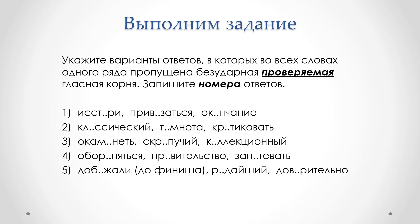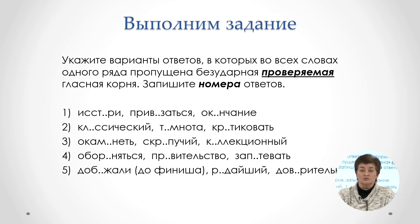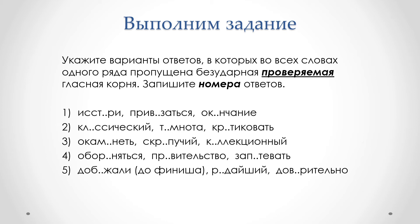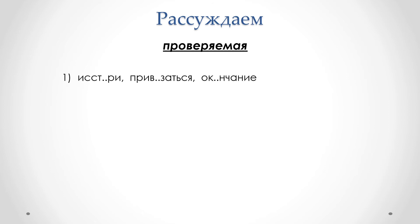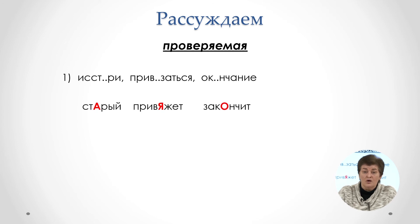Задание номер 9 включает ещё две группы слов: с проверяемыми гласными и непроверяемыми. О проверяемых мы говорили на первом занятии. В чём заключается сложность? В том, что каждому слову надо подобрать проверочное. Мы знаем два способа: форма слова и однокоренное проверочное слово. Алгоритм выполнения тот же: прочли задание, выделили, какую гласную необходимо найти, прочитали все слова и начинаем рассуждать. Есть ли проверяемая гласная в первом ряду? Обнаруживаем, что к каждому слову мы можем подобрать проверочное. Ответ номер 1.